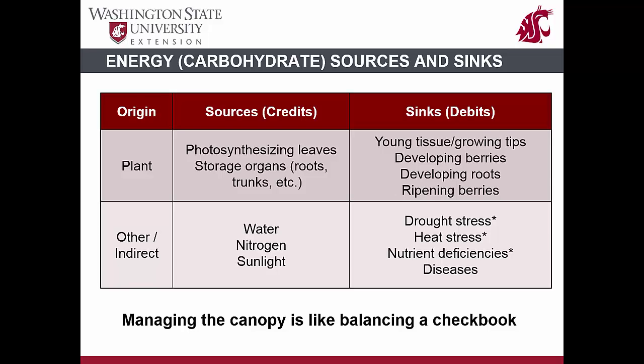Controlling how much energy the vine produces and where that energy is diverted to is called energy balance. In addition to the leaves that can convert sunlight into usable energy for the vine, other parts of the vine can also be energy sources, including woody trunks, cordons, and root systems, which act as storage units that carry produced energy over from one season until the next. The parts of the vine that use the produced energy include any tissue that is rapidly growing, such as root tips, shoot tips, flowers, and clusters. These are often referred to as energy sinks.